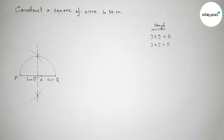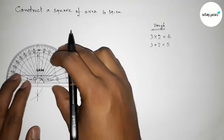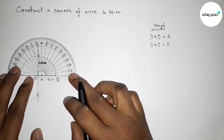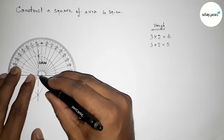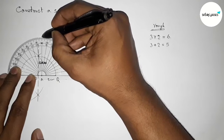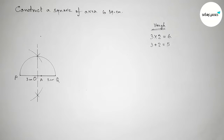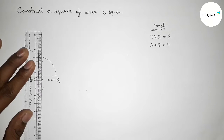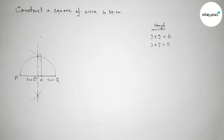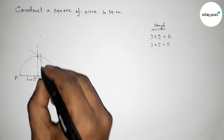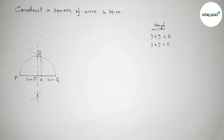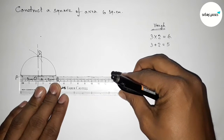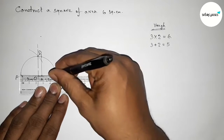Next we have to draw a 90 degree angle at point A using a protractor. Placing the protractor perfectly on point A, marking 90 degrees. Joining this line — it meets the semicircle at a point D. AD is one side of the square. Now extending the line PQ.